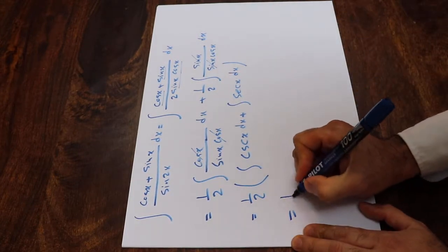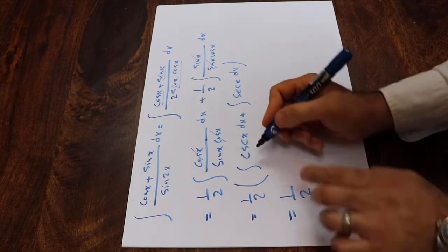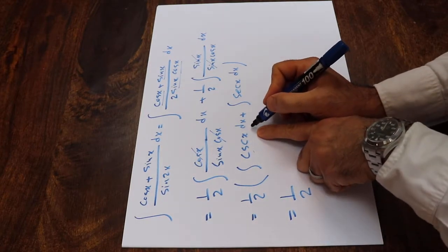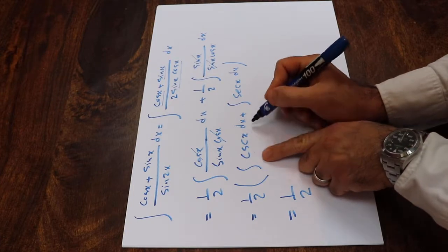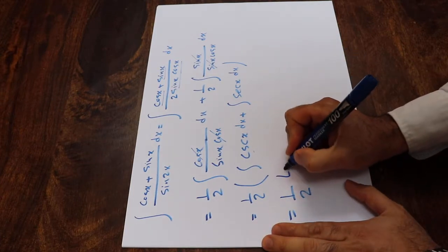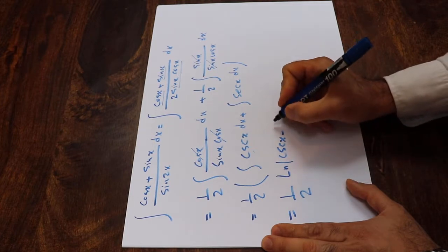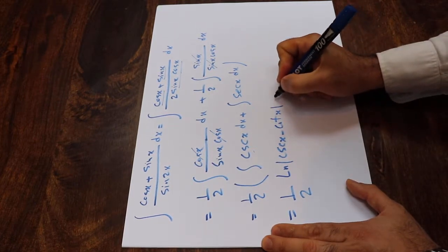Therefore this one will be equal to 1 divided by 2 times integral of cosecant x. From table of integral, we know that the integral of cosecant x is equal to ln cosecant x minus cotangent x.